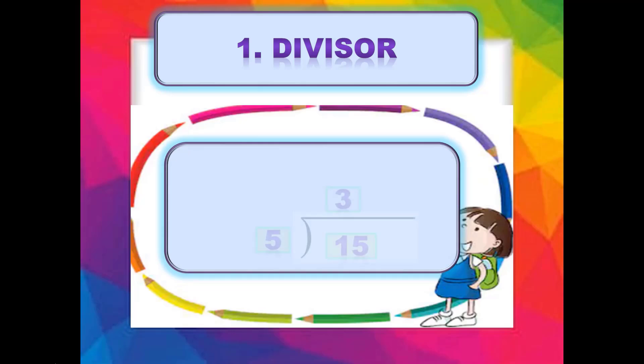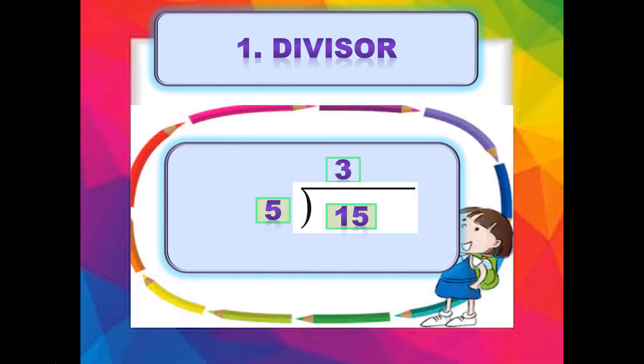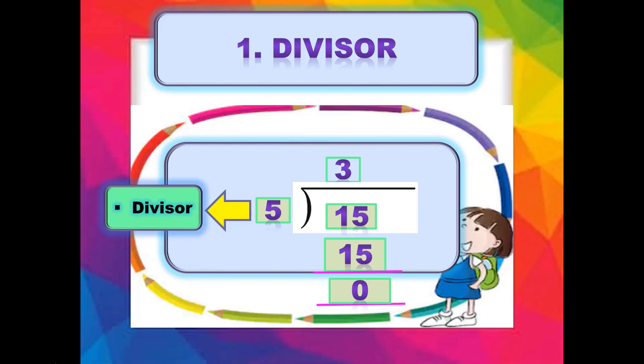Now in long division، ہمارا divisor کون سا number ہوگا؟ Sign کے اندر 15 لکھا ہوا ہے اور sign کے باہر 5 لکھا ہوا ہے۔ ہم 15 لکھتے ہیں، 15 minus 15 = 0۔ وہ number جو division sign سے باہر لکھا ہوا ہوگا — یہاں 5 باہر لکھا ہوا ہے — تو this 5 will be our divisor۔